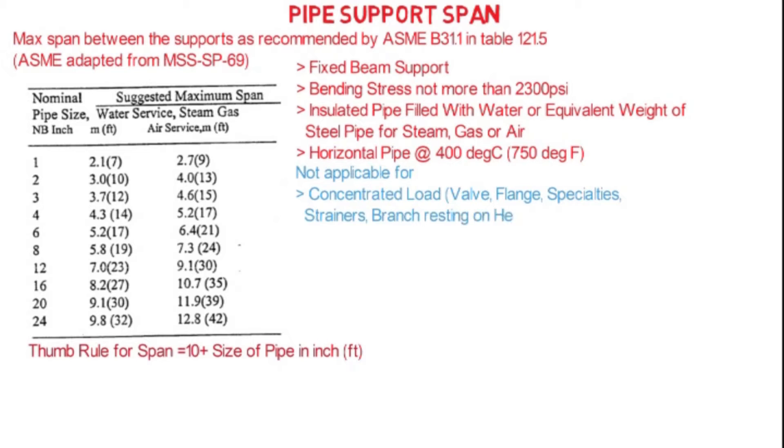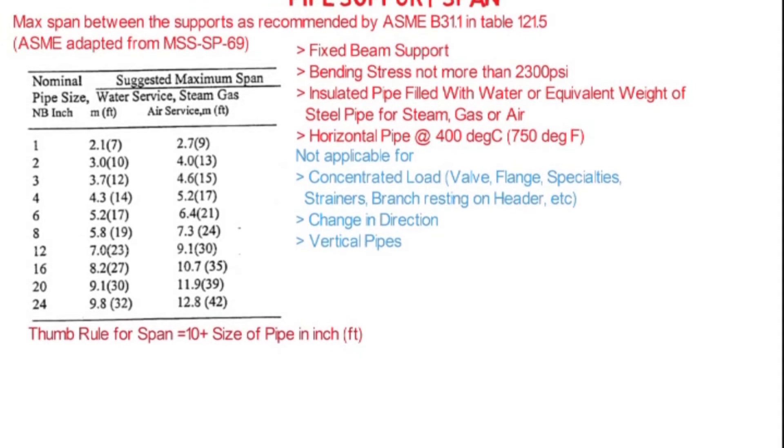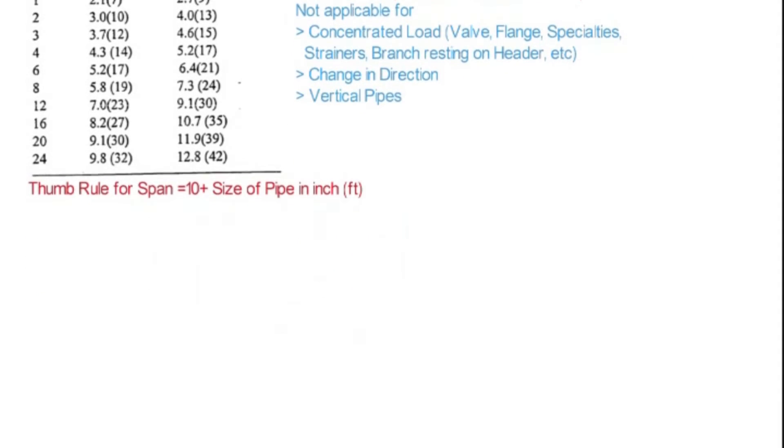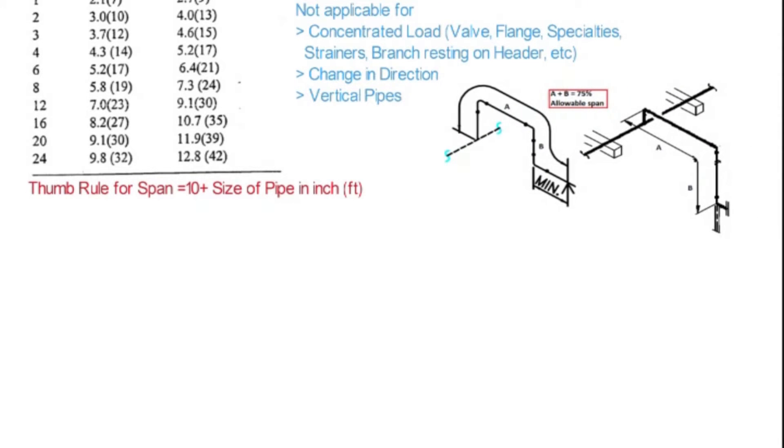And for the vertical pipes, we have to reduce the span as mentioned in the chart. When there is a change in direction, in this case we have to take 65% of the allowable span, considering the vertical run should not be exceeding 3 feet.